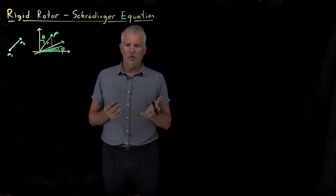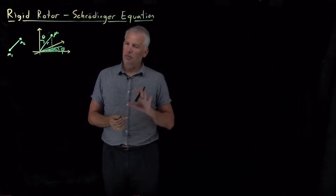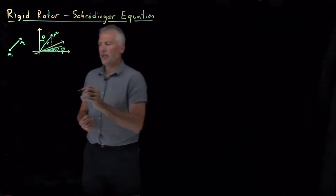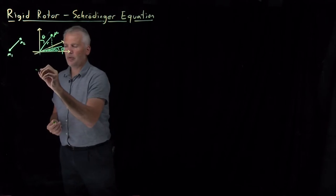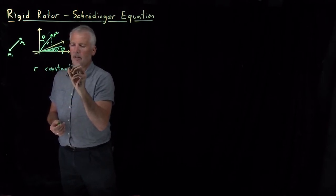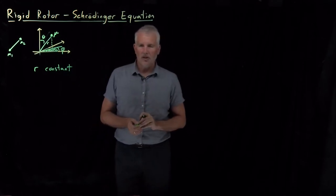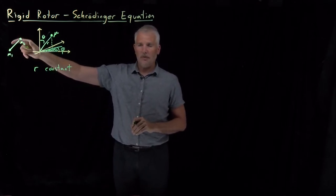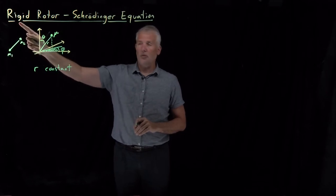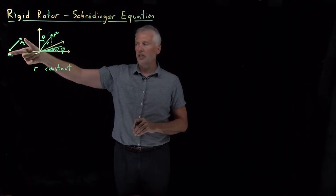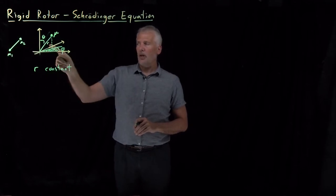We're going to treat those two problems separately, postponing vibrations and focusing first only on rotation. To do that, we'll require that r be constant — it's not going to change. When this molecule rotates, it does so with a fixed bond length: it's a rigidly rotating molecule, rigid rather than flexible.